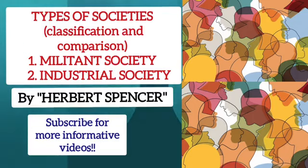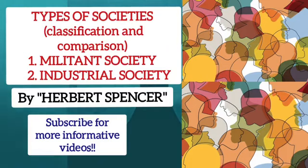The second characteristic of a militant society according to Spencer is a centralized pattern of authority and social control. Here the military head is also the political head, exercising despotic control over the life and property of all his subjects. Absolute control of the ruler makes necessary a clear, precise, and rigid hierarchy of power throughout society, with officials at each level being completely subservient to those above.